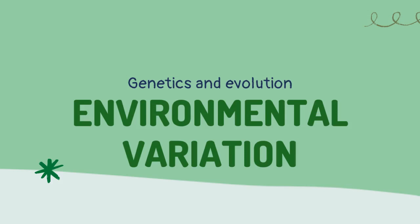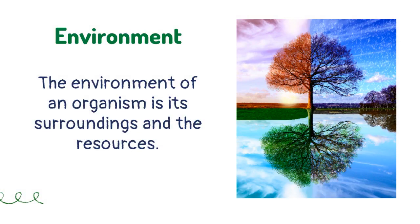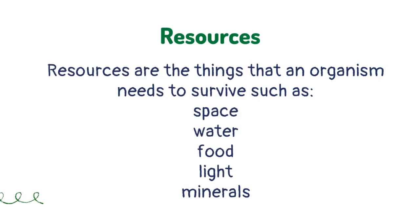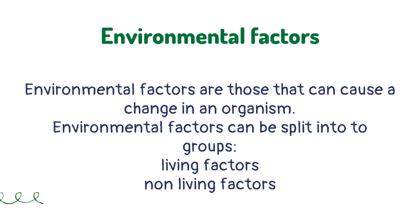Environmental variation. The environment of an organism is its surroundings and the resources. Resources are the things that an organism needs to survive, such as space, water, food, and minerals. Environmental factors are those that can cause a change in an organism. Environmental factors can be split into two groups: living factors and non-living factors.